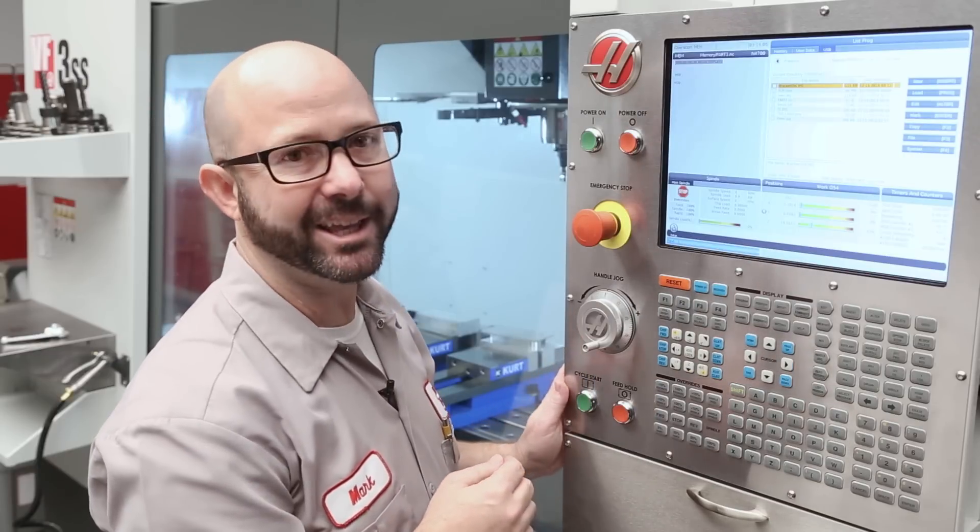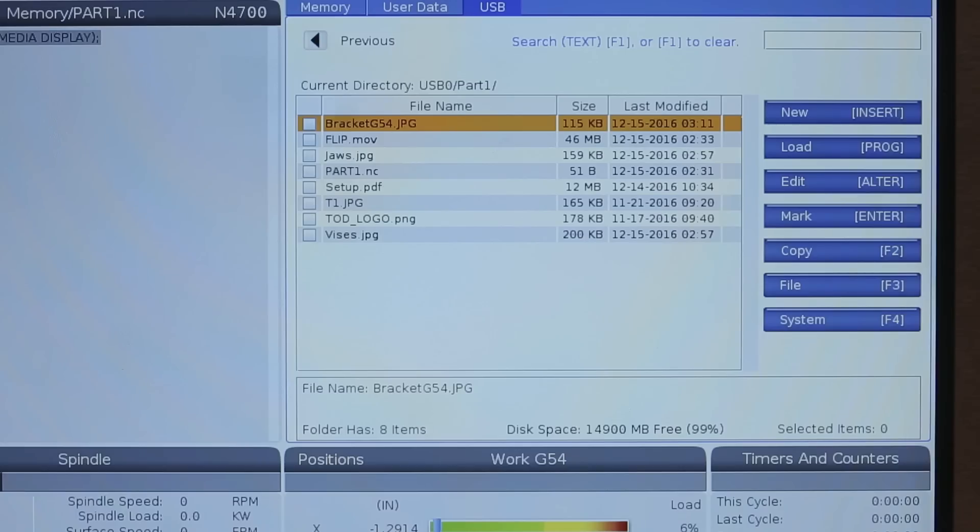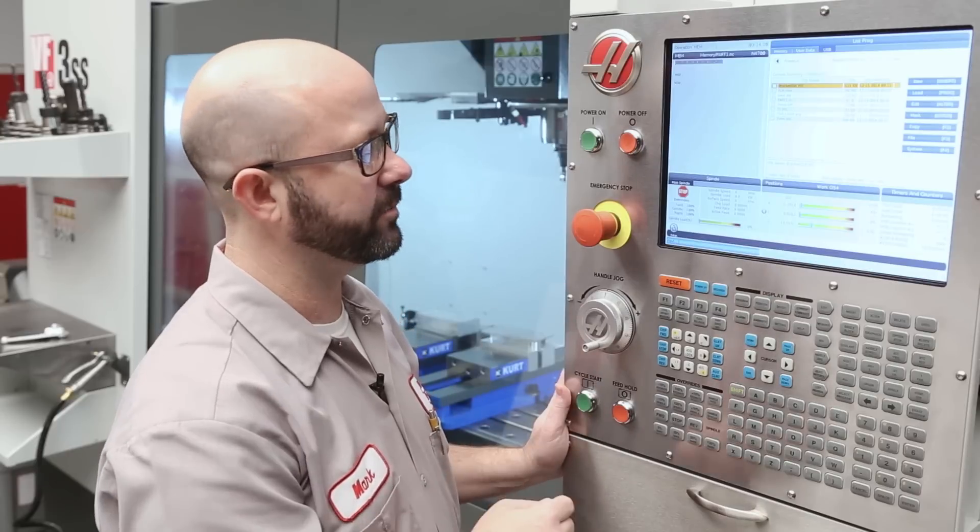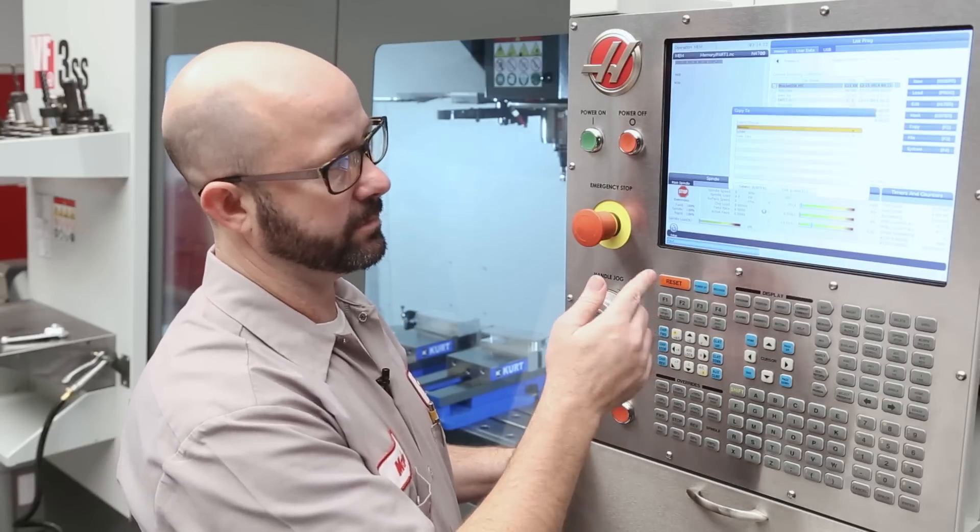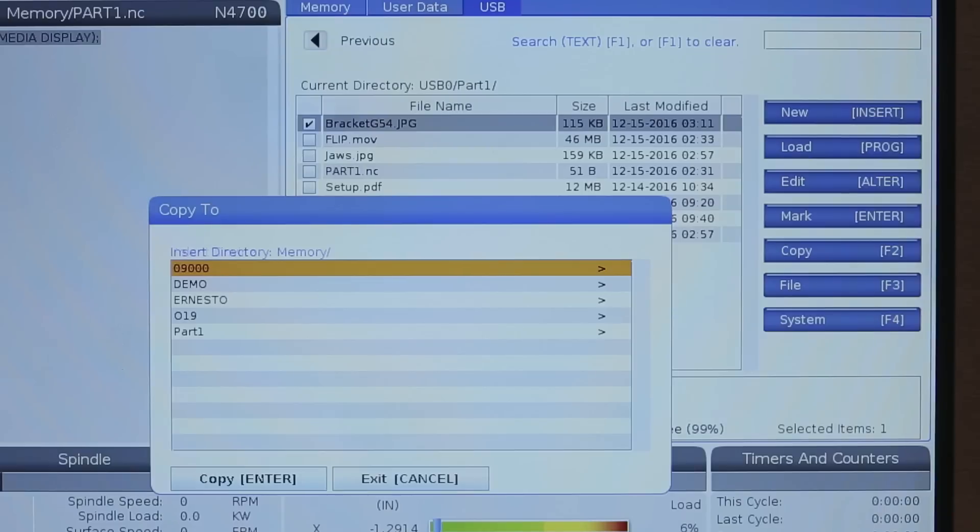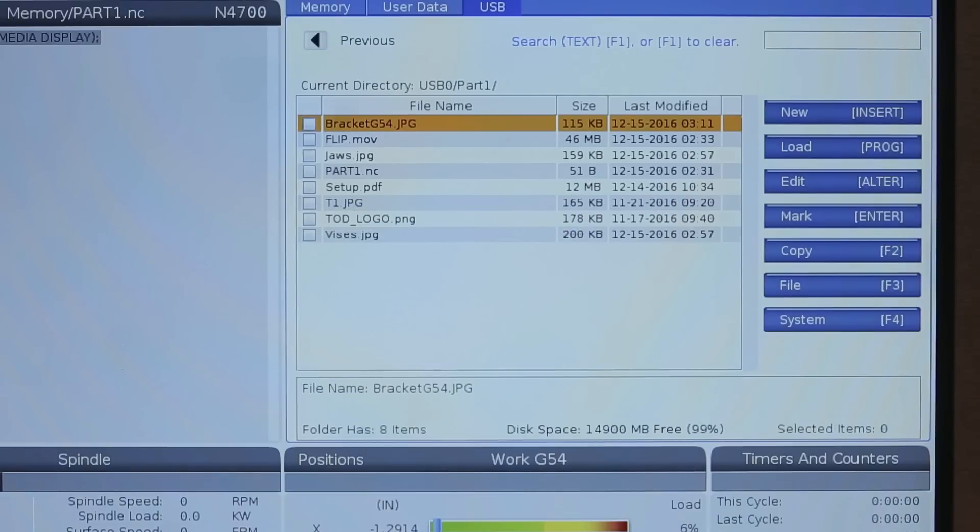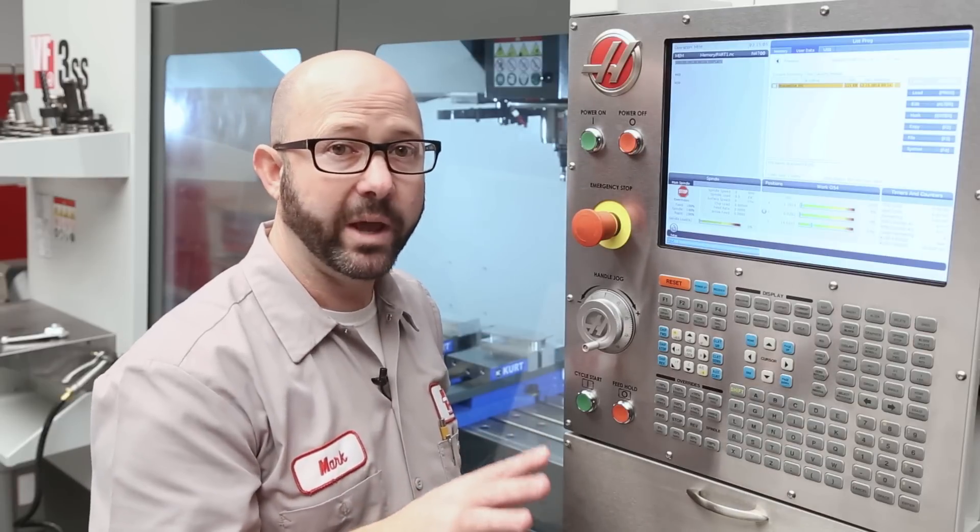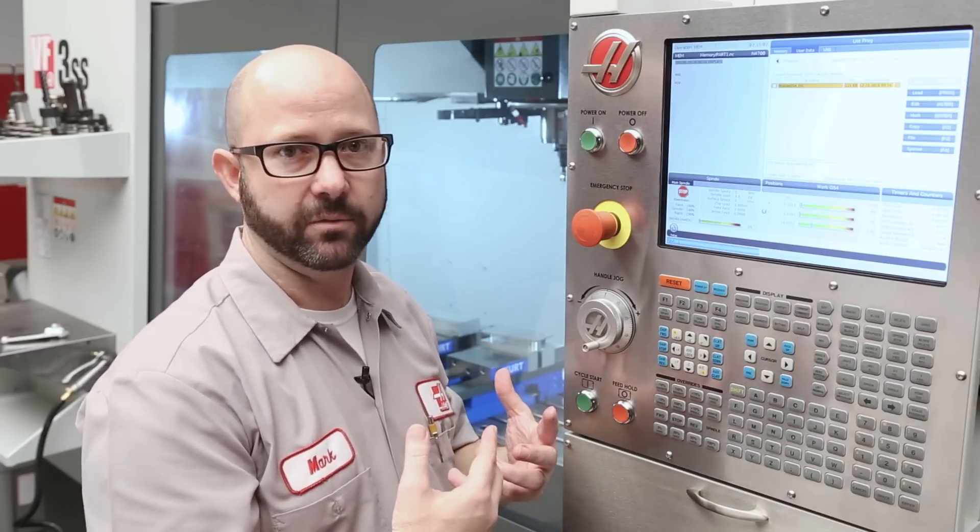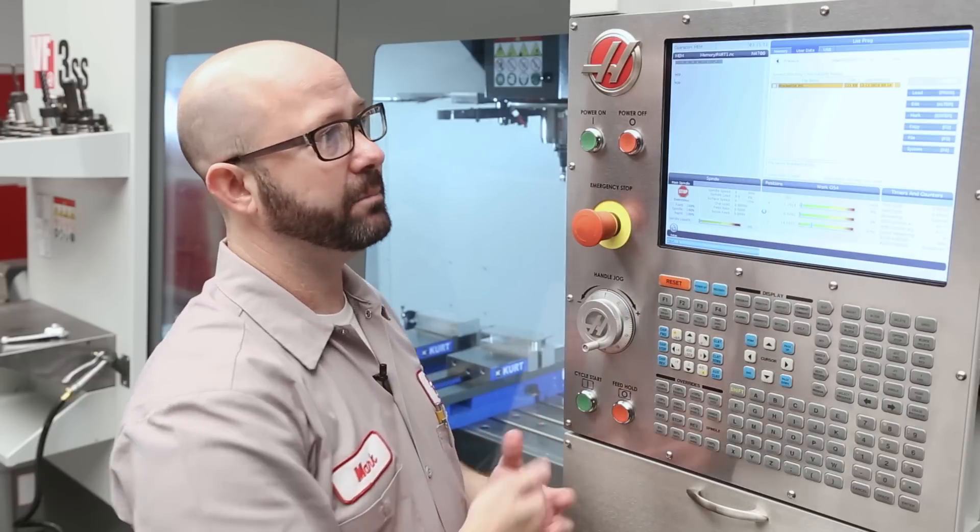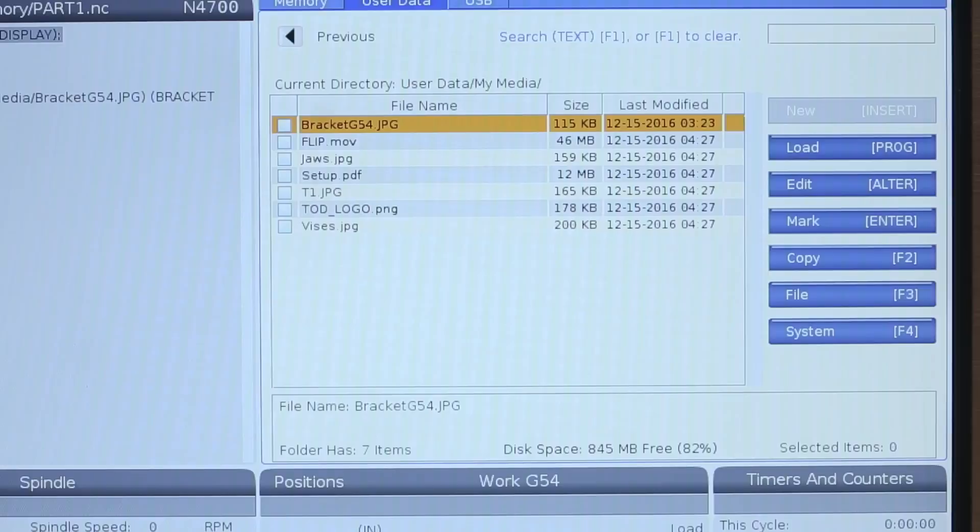There's a file called bracket_g54.jpeg, that's my setup sheet. I'm going to copy this file into memory, just F2 and follow the instructions. Now there are a couple different ways to make use of these media files on the control. The first of which is just to highlight that media file and press select program.